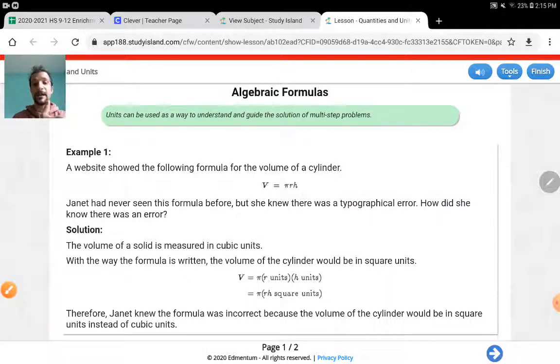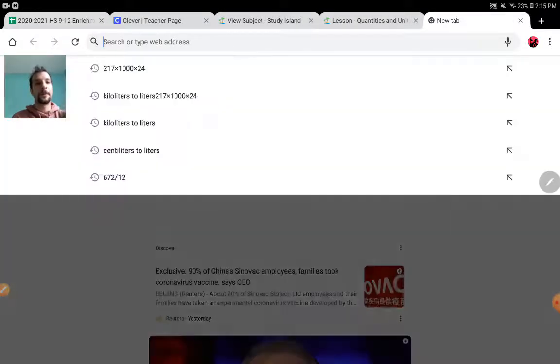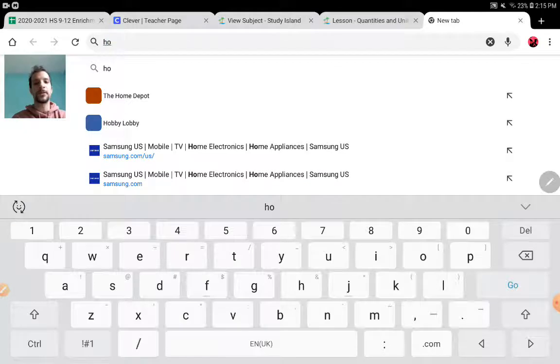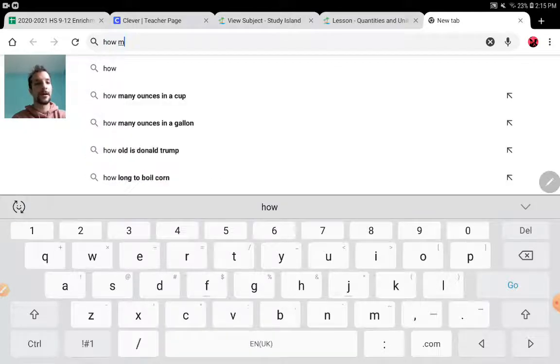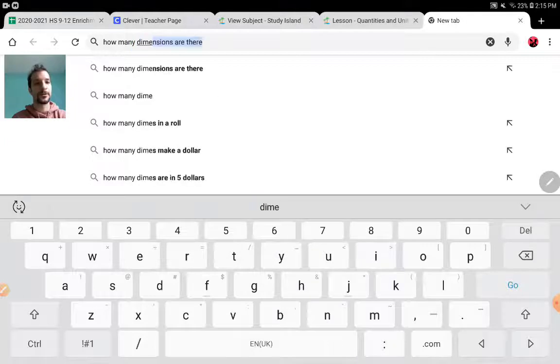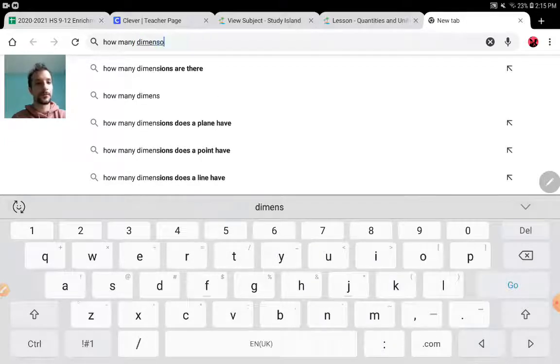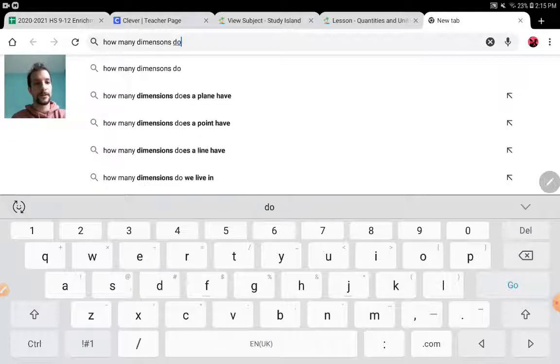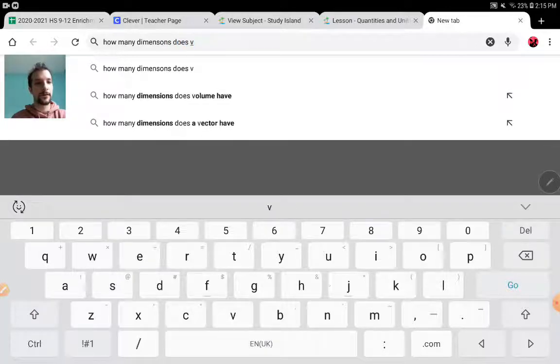Now, let's read the rest of the question. Janet had never seen this formula before, but she knew that there was a typographical error. And the question is, how did she know there was an error? I want to show you something. Remember, how many units did we have in this formula? We have two units, right? Just keep that in mind.